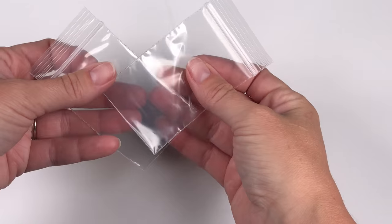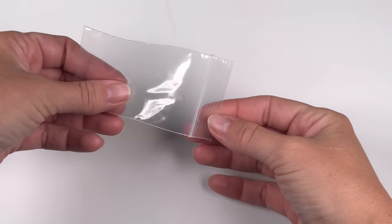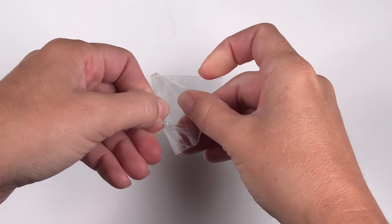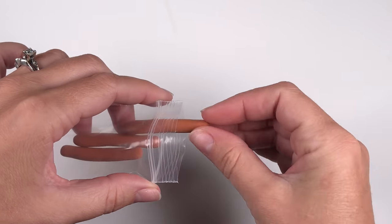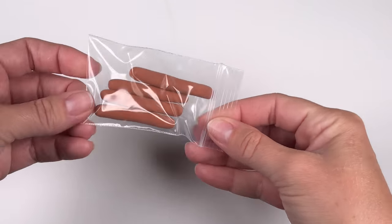You can use regular Ziploc bags or you can use these smaller jewelry bags. Either way, you should be able to make it the right size for your hot dogs. Stick 4 to 5 in at a time and then seal the bag.